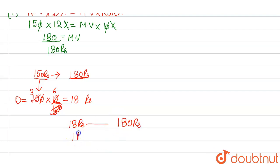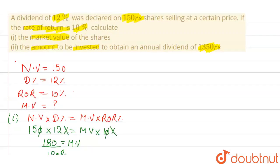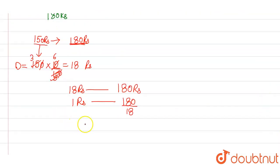So, 1 rupee dividend will be earned when we invest 180 divided by 18. Now, how much money do we have to earn as a dividend? 1,350.